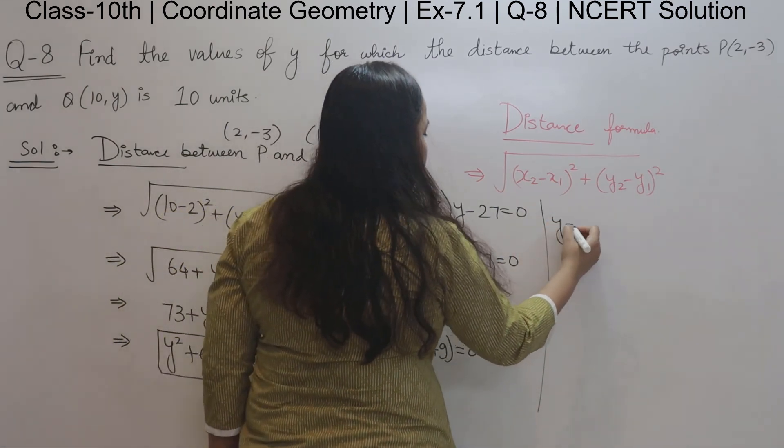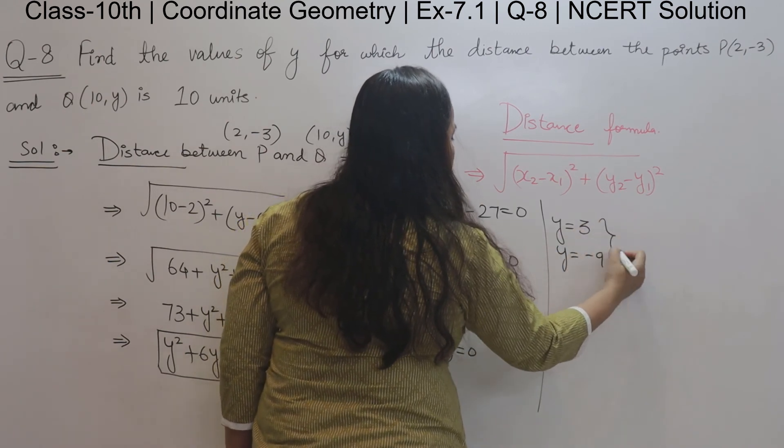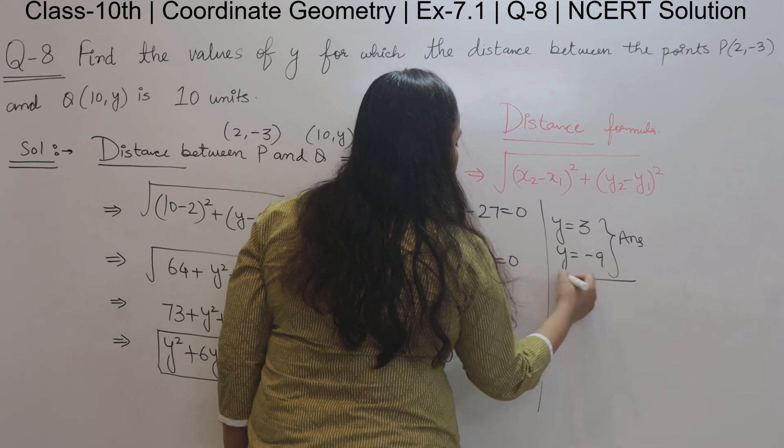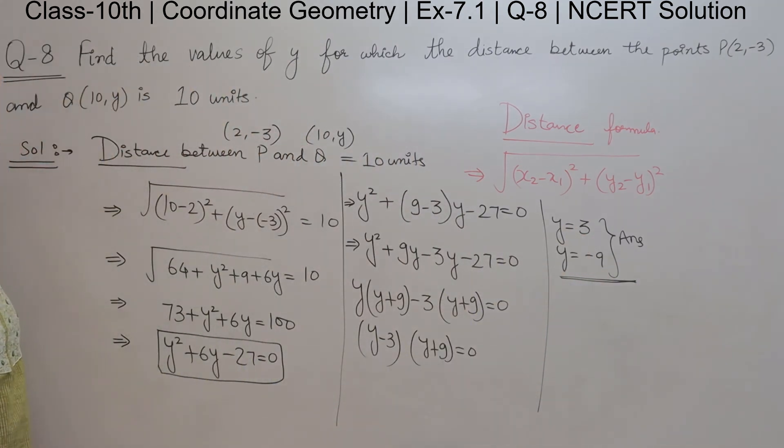And y is equal to 3 and y is equal to negative 9. So these are the answers. y has two values, you can see: 3 and negative 9.